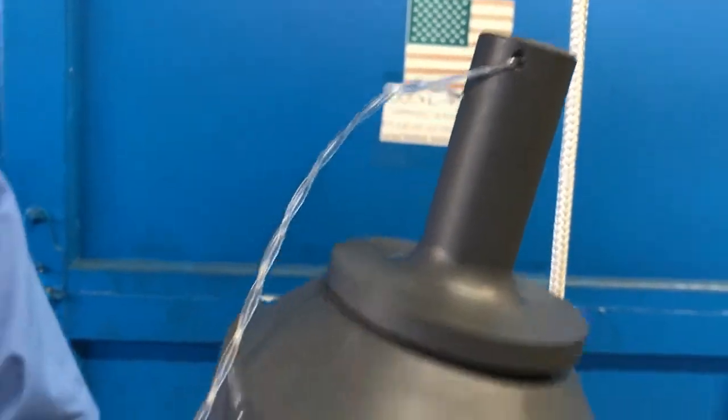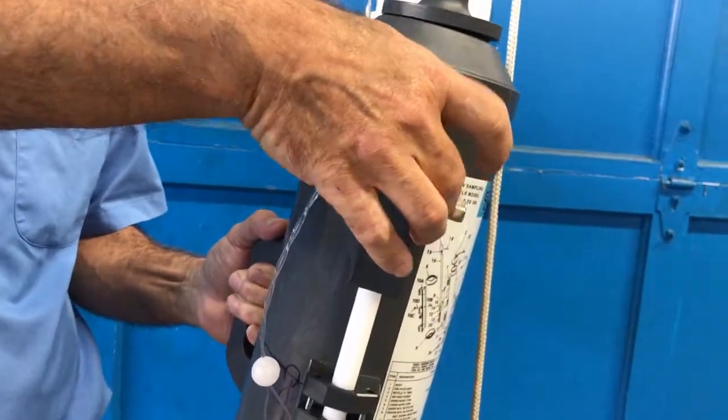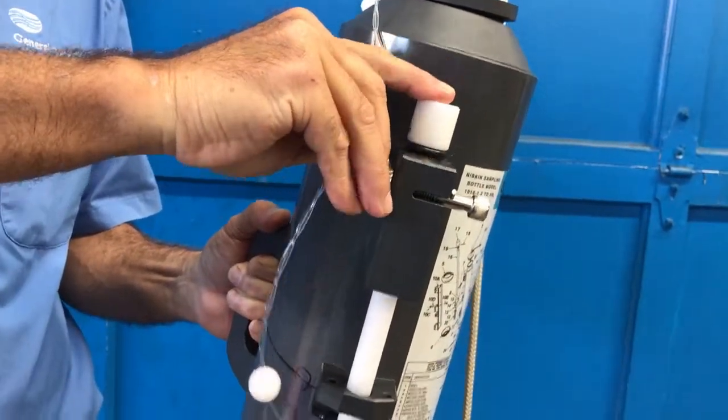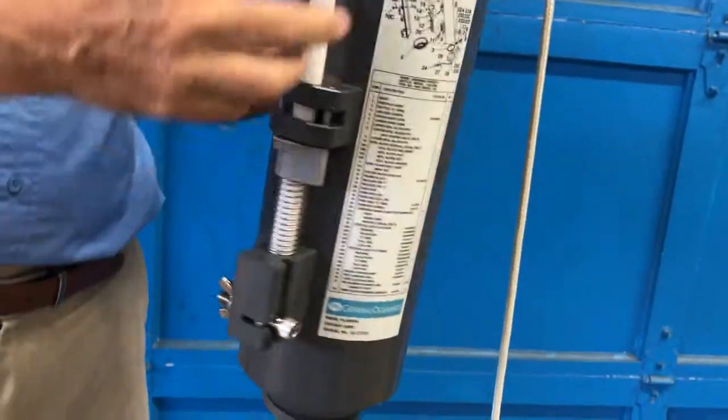The side of the bottle has a spring-loaded pushrod held in place by PVC mounting blocks. The upper and lower mounting blocks are equipped with wire clamp bolts and wing nuts.